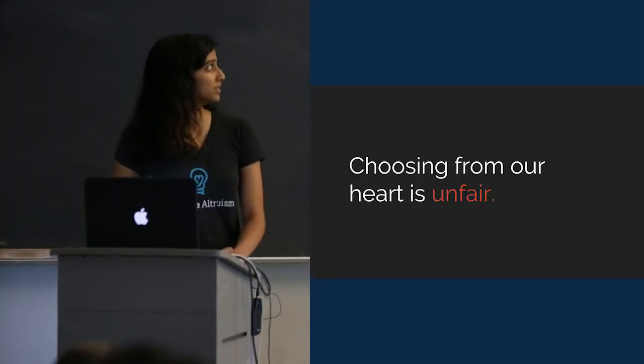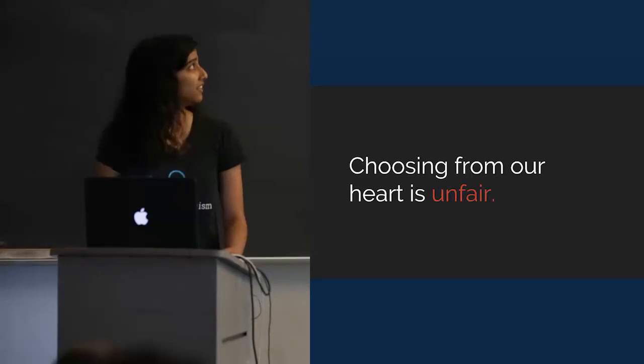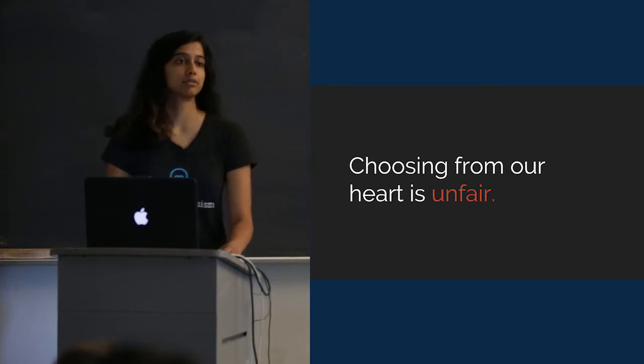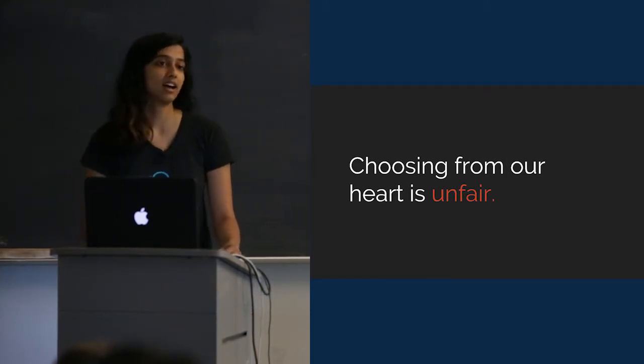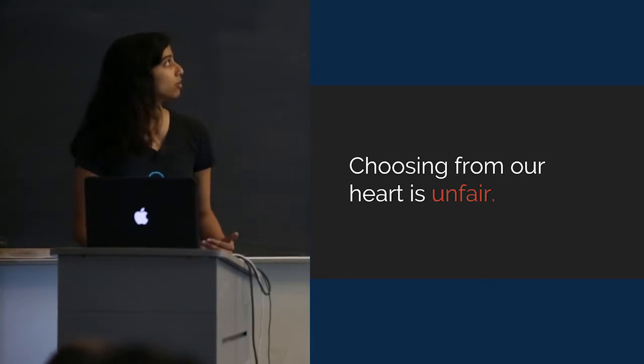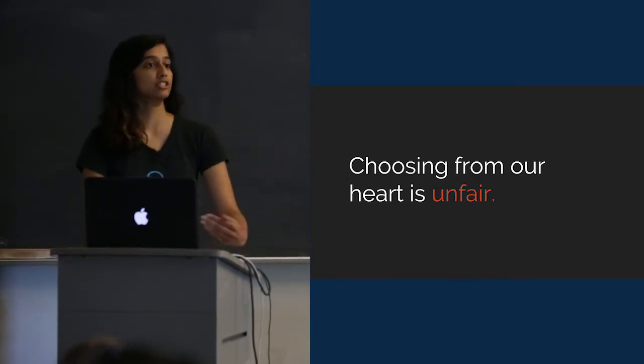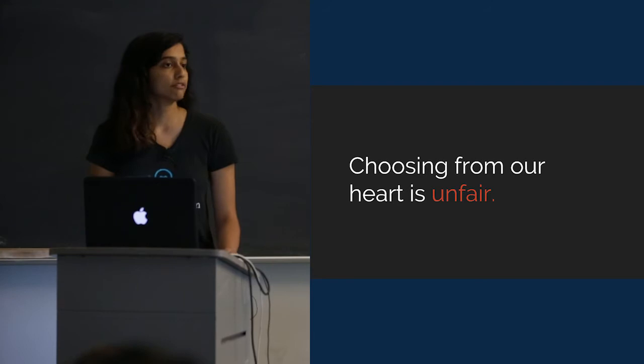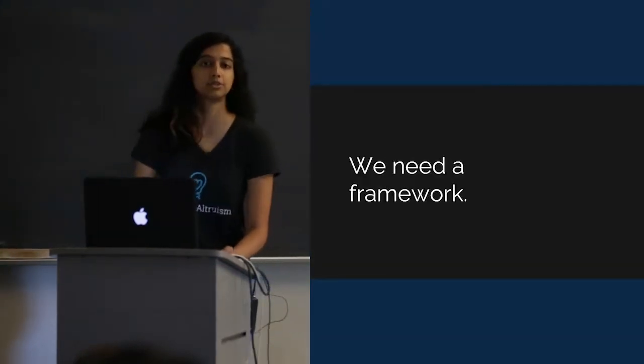And effective altruists understand, like Anna, that choosing from our heart is unfair too. We're human. We're biased to want to support those who are like us. Our experience informs the things that we think are urgent. And if we don't try and move past that and actually do the research, so if we can't choose from our heart, we need some kind of framework to choose the best cause.